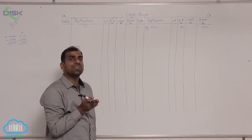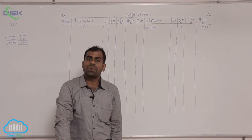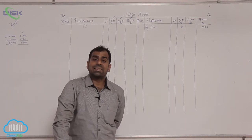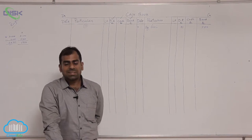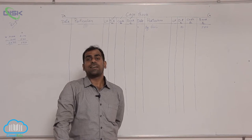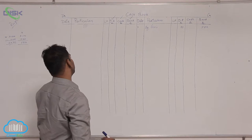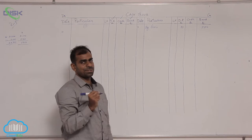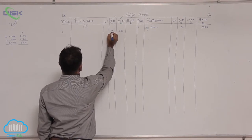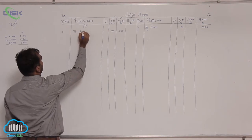Next, I am dealing with the transaction of the 10th: received check from Kalyan, rupees 425, discount allowed 75. Check the date of 17th — Kalyan's check is deposited in bank — meaning the date of receipt of the check and its deposit are different. So you have to deal with this in two steps. On the 10th, we treat it as cash received from Kalyan. Though it is a check, we treat it as cash received, recording 425 in the cash column, 75 in the discount allowed column, and Kalyan's name in the particulars column.